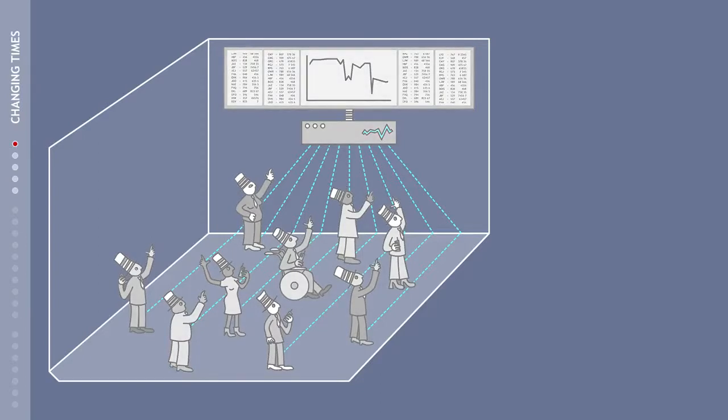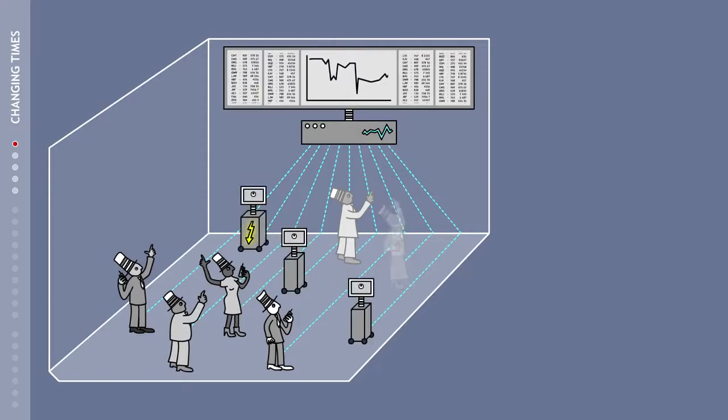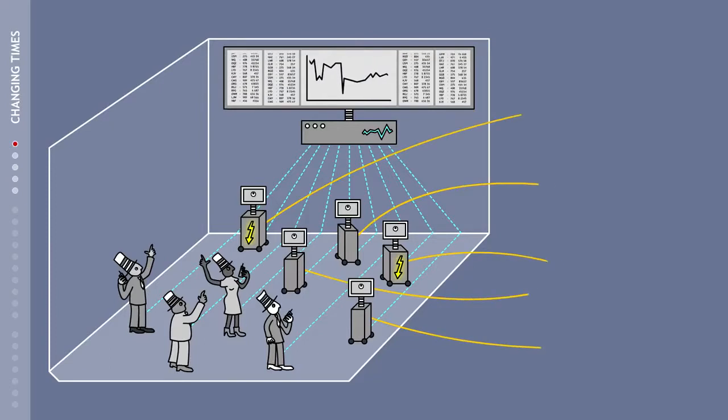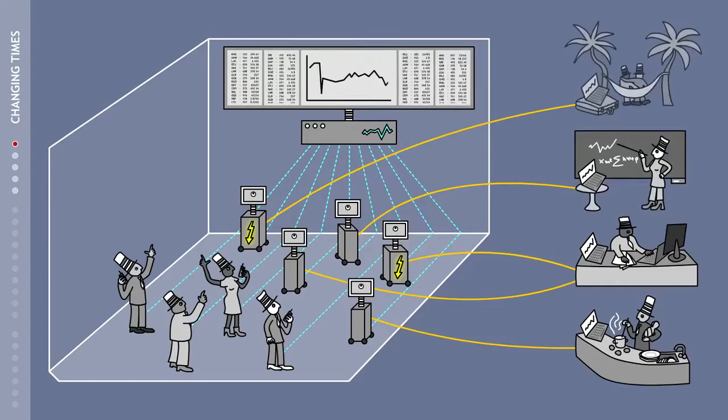But this picture has changed. The room is still there, along with the monitors, but the crowd has become much smaller. Quietly humming computers have taken their place. The traders who monitor and control the computers are either sitting at home or in the office. These computers work much faster, never go on holiday, and rarely require a person to run them.